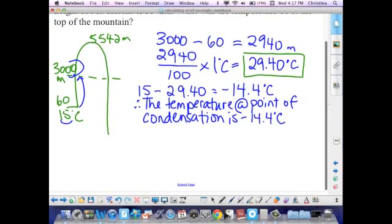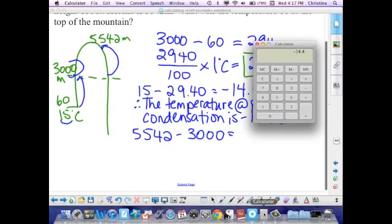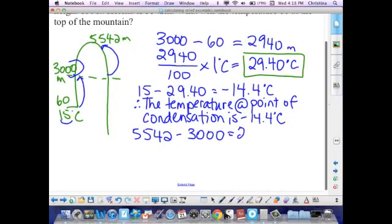Now, just like before, we're going to continue on. We need to determine the total drop in temperature from the point of condensation to the top of our mountain. We're going to calculate the difference between the point of condensation and the top of the mountain. So 5542 minus 3,000, our height at point of condensation, which gives us an answer of 2542 meters.